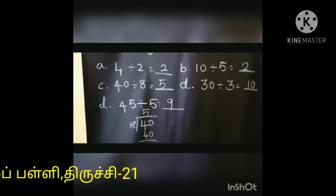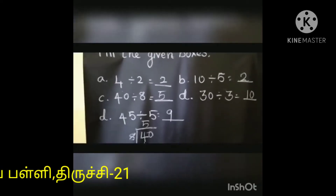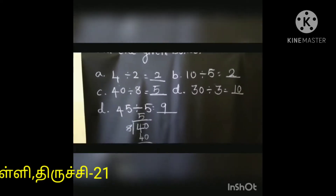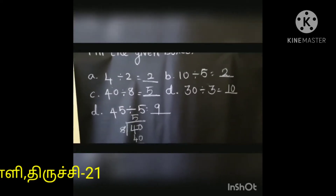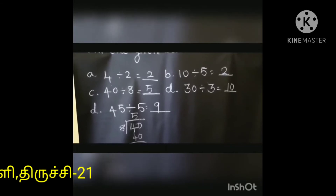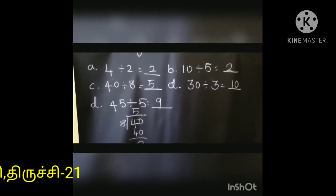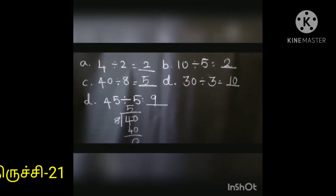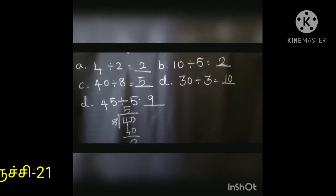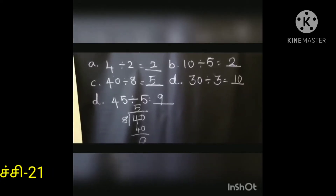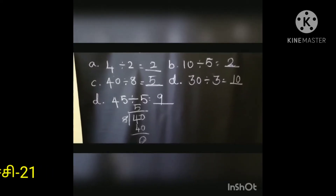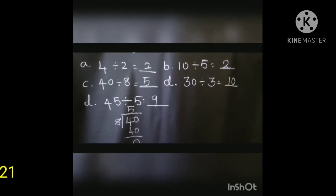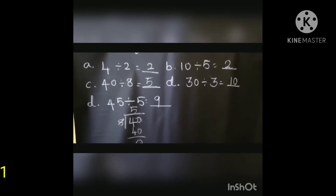Okay, it's very simple. So in the sum: first, 4 divided by 2 — the answer is 2. Then B: 10 divided by 5 — 5 2's are 10, answer is 2. 40 divided by 8 — 8 5's are 40. Then 30 divided by 3 — 10 3's are 30. And last, 45 divided by 5 — 9 5's are 45. Using the table, you get the answers.